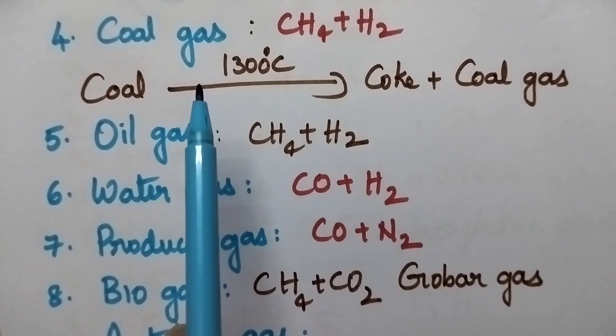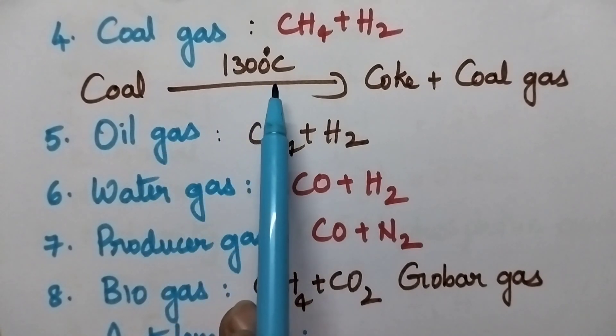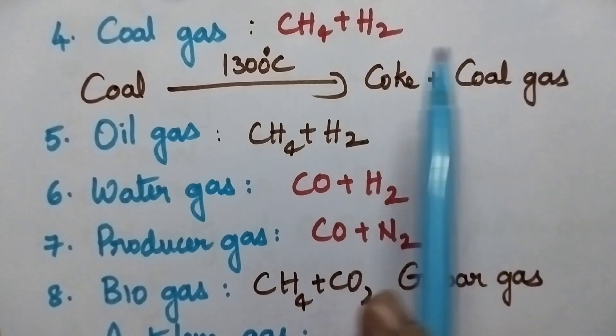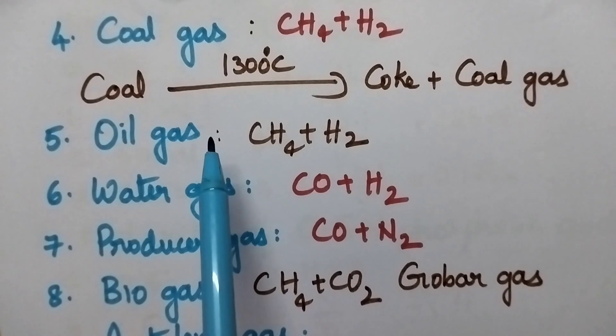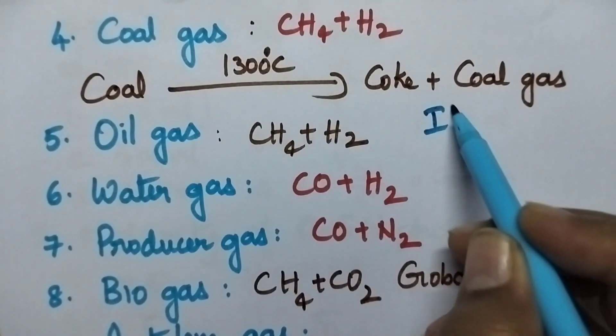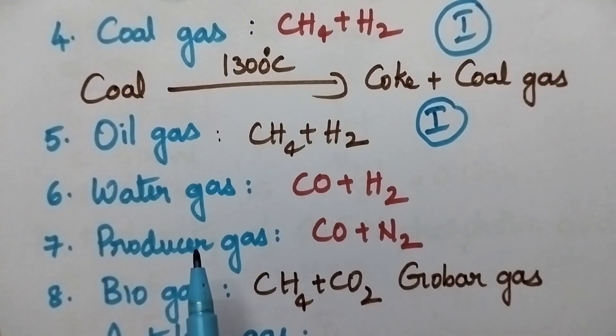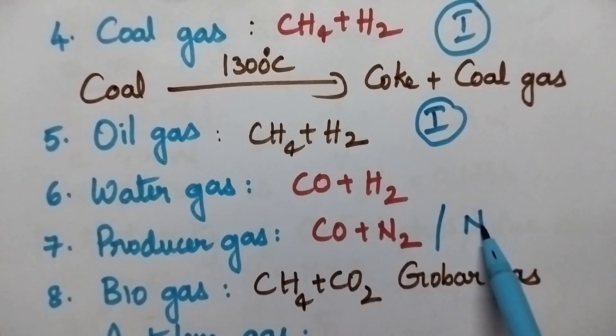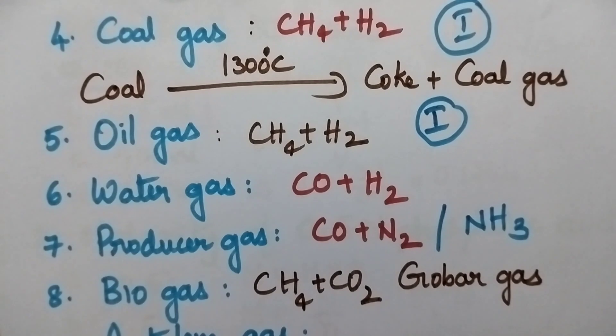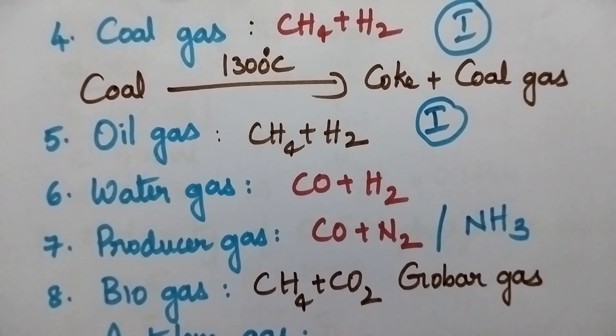Coming to the other gaseous fuels: Coal gas can be obtained by heating coal up to 1300 degree centigrade. Then it will be converted into coke and coal gas. Its composition is methane plus H2. Oil gas composition is methane plus H2. When we discuss about the calorific value of these synthetic fuels, oil gas and coal gas exhibit highest calorific value. Water gas composition is CO plus H2. Producers gas composition is CO plus N2. And this producer gas is mainly used for the manufacturing of ammonia through Haber's process. Biogas is also known as gober gas and its composition is methane plus CO2.